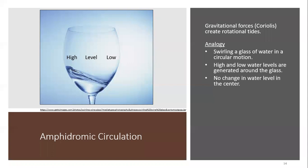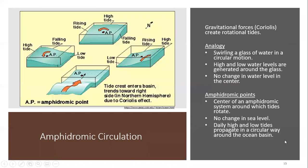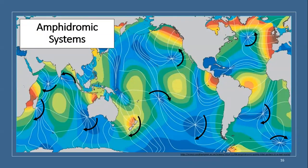The development of amphidromic circulation. The Coriolis effect creates gravitational forces which form rotational tides in the ocean's basins. A good analogy of this would be swirling a glass of water in a circular motion. High and low water levels are generated on opposite sides of the glass, while there is no change in water level in the center. Likewise, tides rotate around what are known as amphidromic points — at an amphidromic point, there is no change in sea level. However, daily high and low tides propagate in a circular motion around the ocean basin. Each ocean basin contains a unique amphidromic system, meaning that each coastline along the continents will experience different tidal levels at different times.